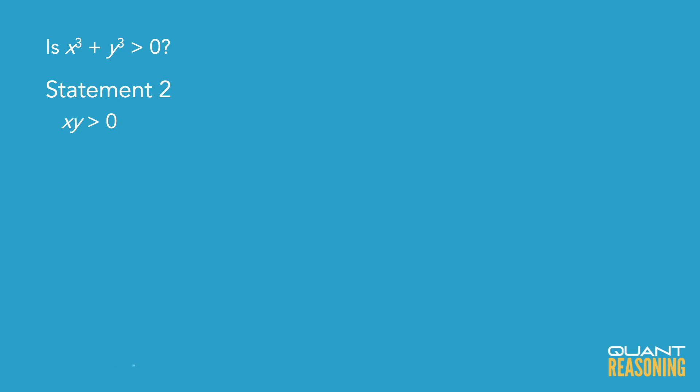Statement two is just the GMAT's way of telling us that x and y are both on the same side of zero. They're either both positive or both negative, but as I mentioned before the intro,